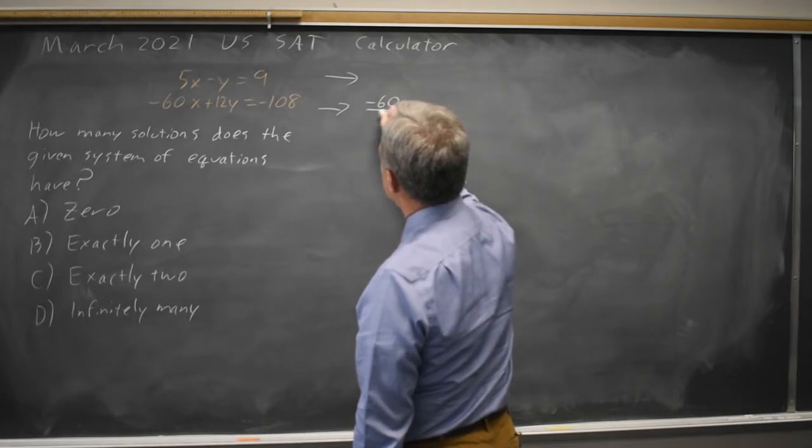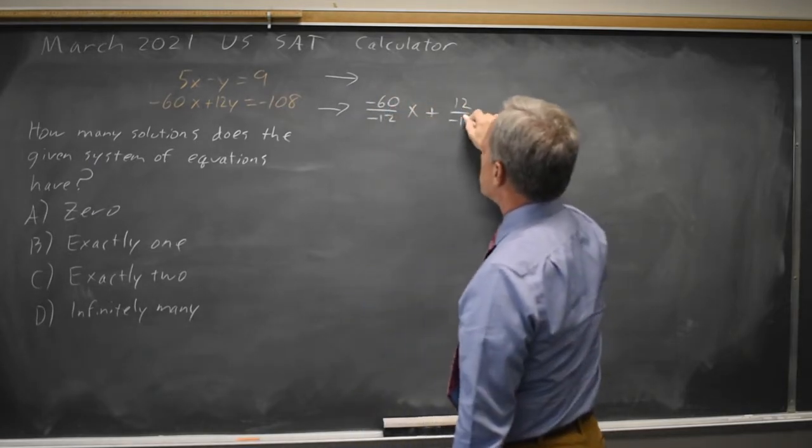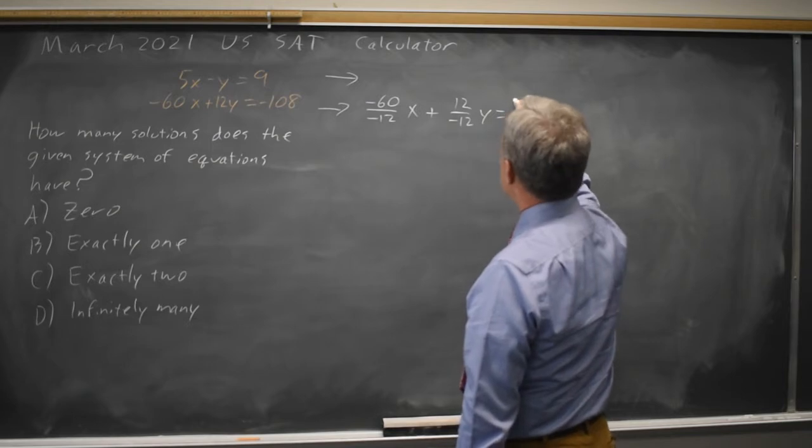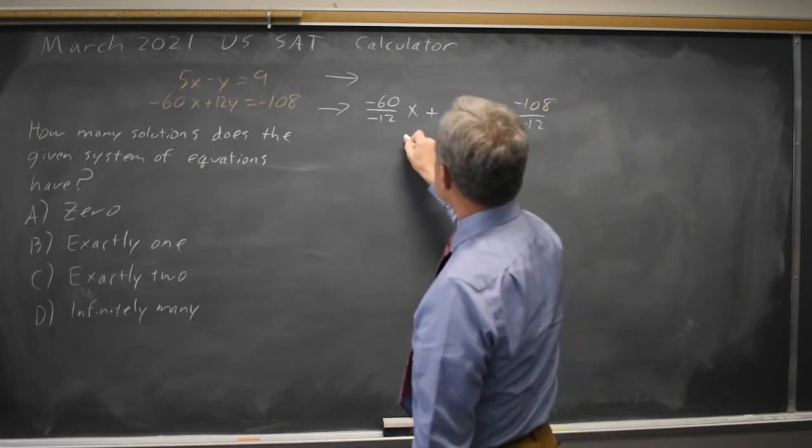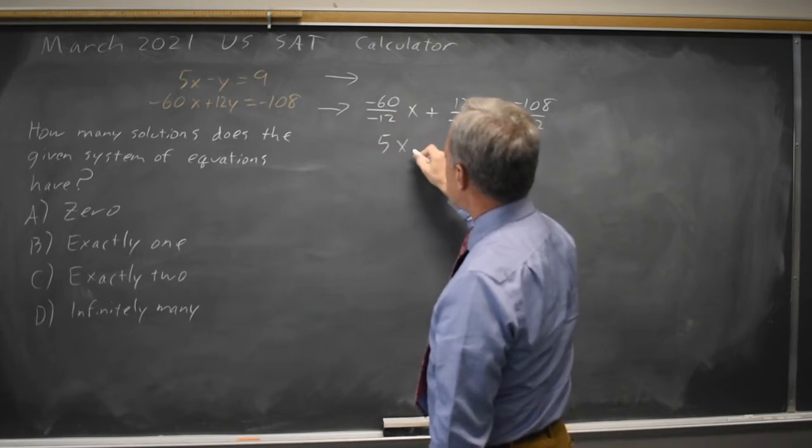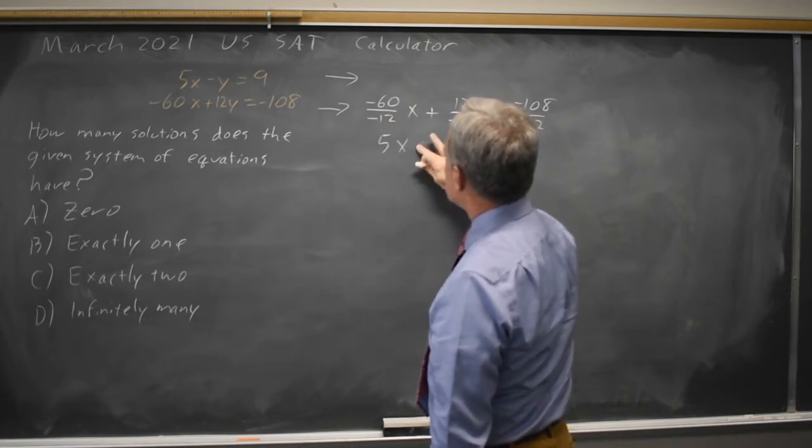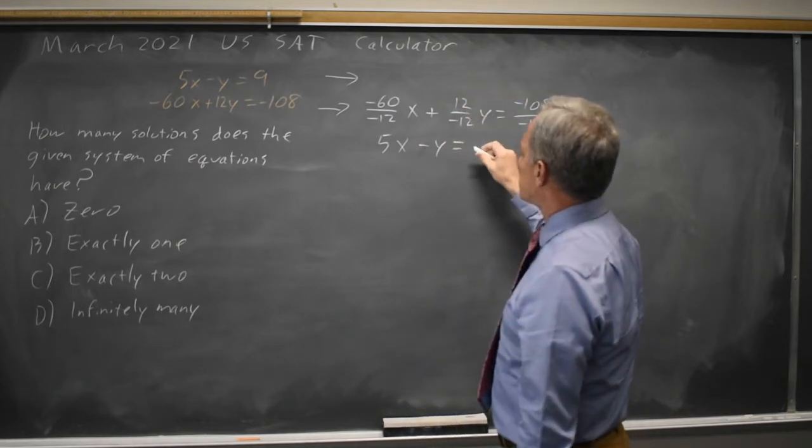So negative 60 over negative 12x plus 12 over negative 12y equals negative 108 over negative 12. And that simplifies to negative 60 over negative 12 is 5. So 5x minus y equals negative 108 over negative 12 is 9.